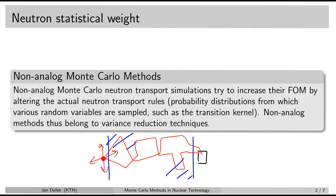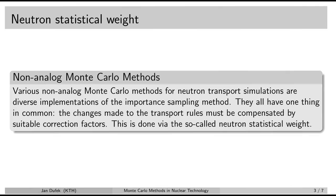There are many other ways how the transport rules can be changed. For instance, we can change the transition kernel that governs the distance between collisions. We can also change the scattering angles. So there are many ways and we are going to learn about a number of them.